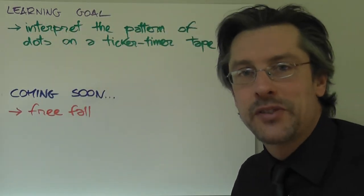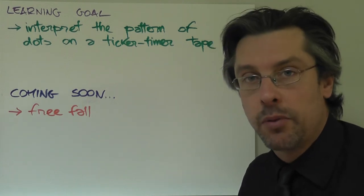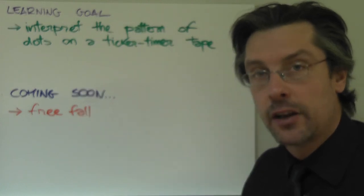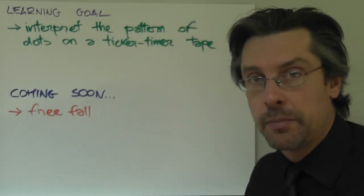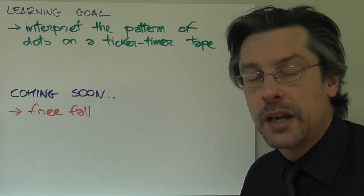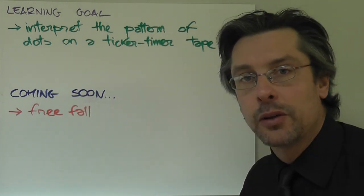So, what was the learning goal of this lesson? By the end of this lesson you should be able to understand, to interpret the pattern of dots that you'll find on a ticker timer tape. Our next lesson will be about falling objects, or more specifically about free fall.